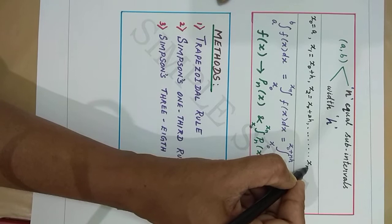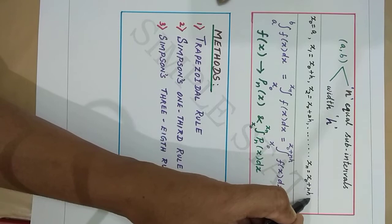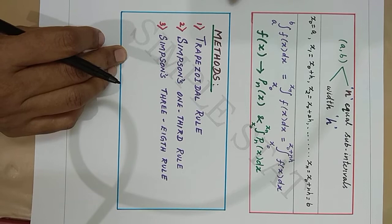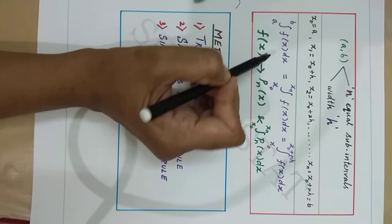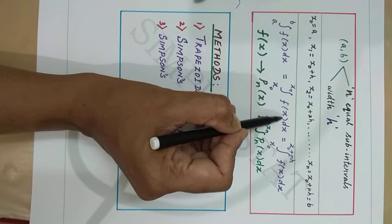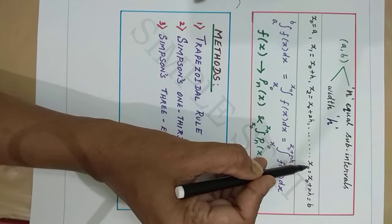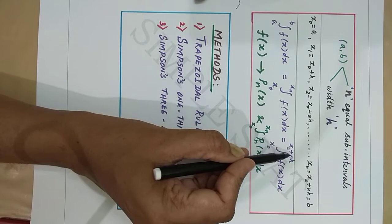xn can be written as x naught plus nh, which is nothing but b. Therefore, to compute integral over a to b of f(x) dx, which can be written as integral from x naught to xn of f(x) dx, or integral from x0 to x0 plus nh of f(x) dx.